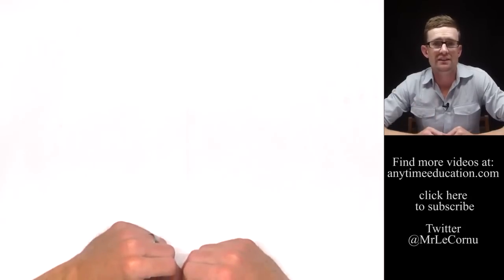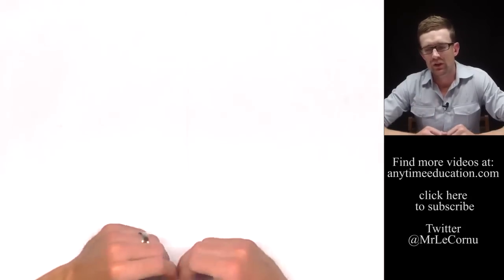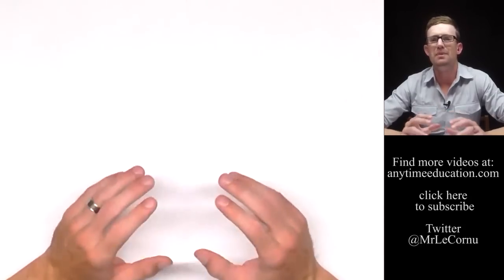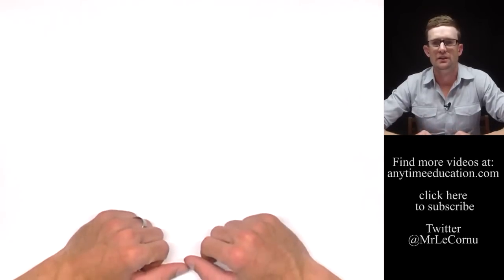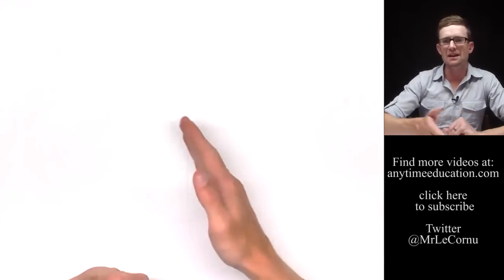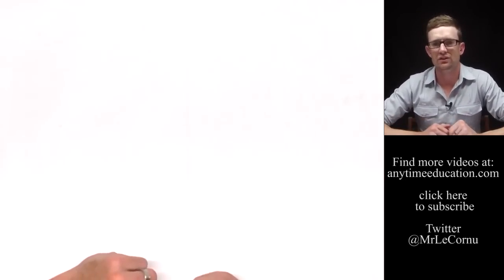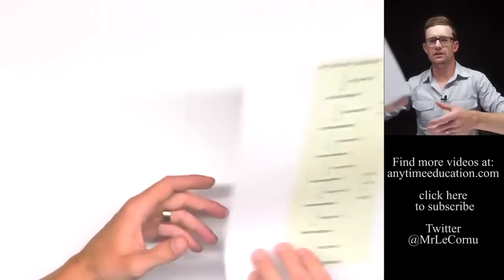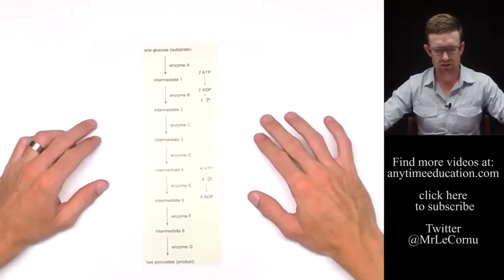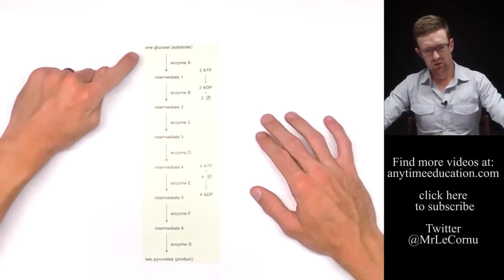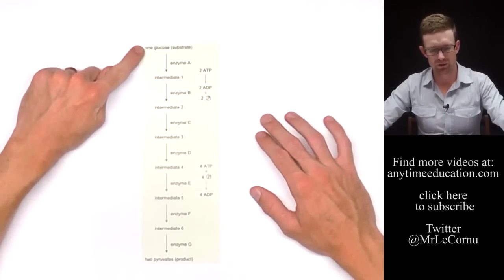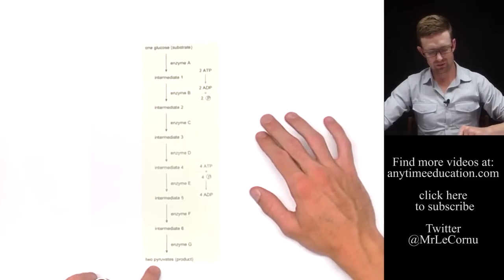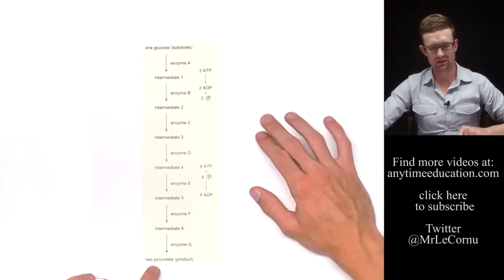The final thing I'd like to tell you about enzymes is that all processes in cells occur in what we call metabolic pathways, which are basically many chemical reactions that occur in a long pathway. Glycolysis is an example that occurs inside cells where we go from a glucose molecule through lots of different reactions until we end up with two pyruvates which are the products.